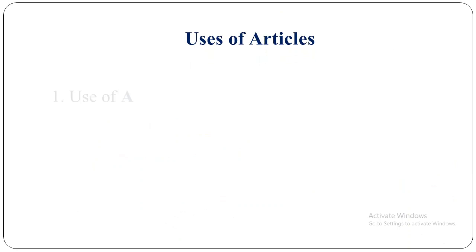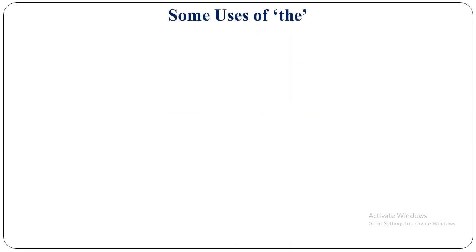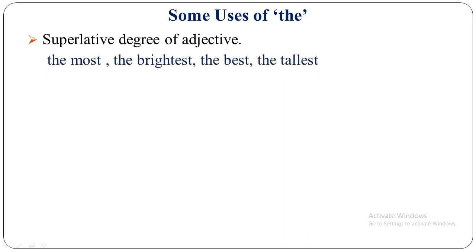Uses of articles: you must know the use of A, use of AN, use of THE, and zero article. Whenever we have an exercise, we use A, AN, or THE; but where an article is not needed, we put a cross — that is called zero article. First, we must use THE before the superlative degree of an adjective. For example: the most, the brightest, the best, the tallest — most, brightest, best, tallest are all superlative degrees.